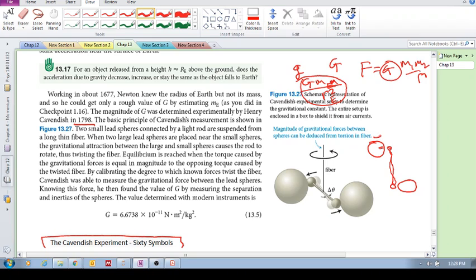And these guys would attract one another, gravitational attraction. And as this guy moved towards that guy, and that guy moved towards that guy, it would cause a torque. So it causes this torque, a rotation, and it causes this fiber to twist.